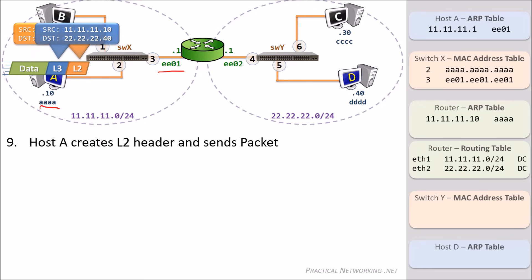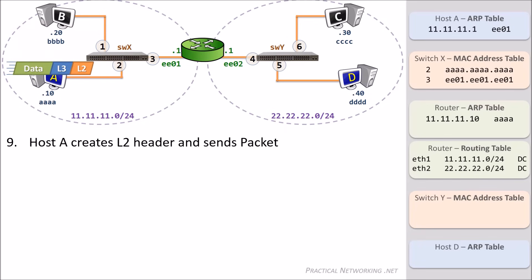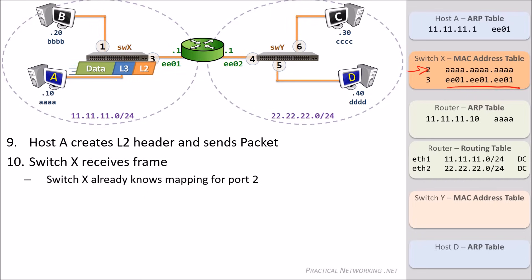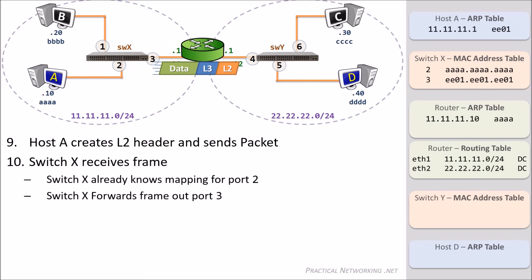Recall that the Layer 3 header included a source IP of Host A and a destination IP of Host D. The Layer 3 header's purpose is to get the data from end to end. The Layer 2 header's purpose is to get the data from hop to hop. With that said, the packet will be sent on its way. The frame will arrive on SwitchX on port 2. SwitchX already has an entry for port 2, so it will simply be refreshed. The destination MAC address of the Layer 2 header was EEE01, and SwitchX already has an entry for this, so it will forward the frame out port 3 to the router.